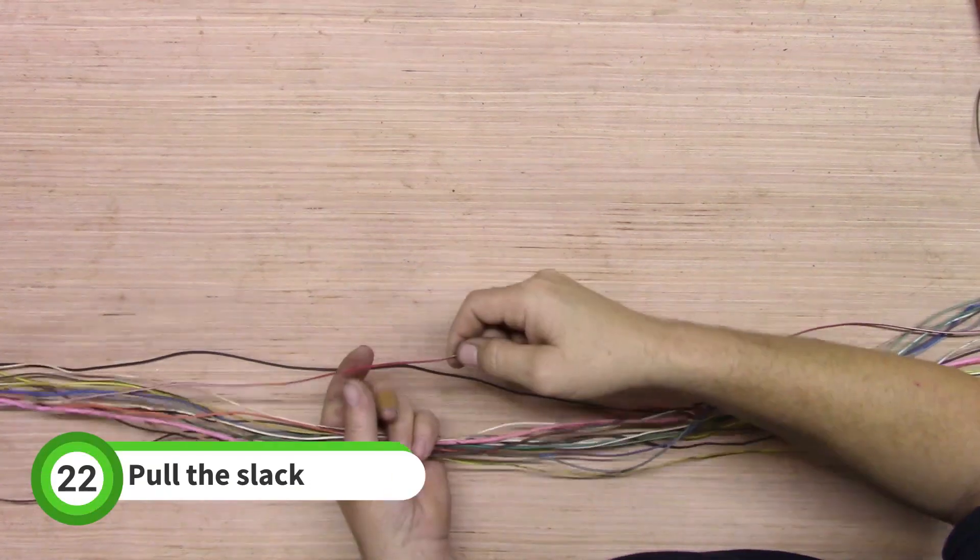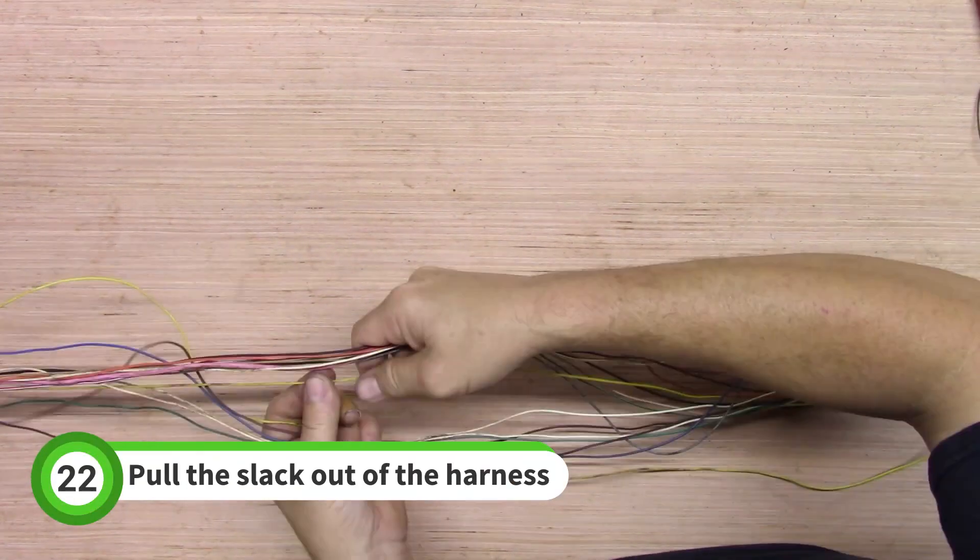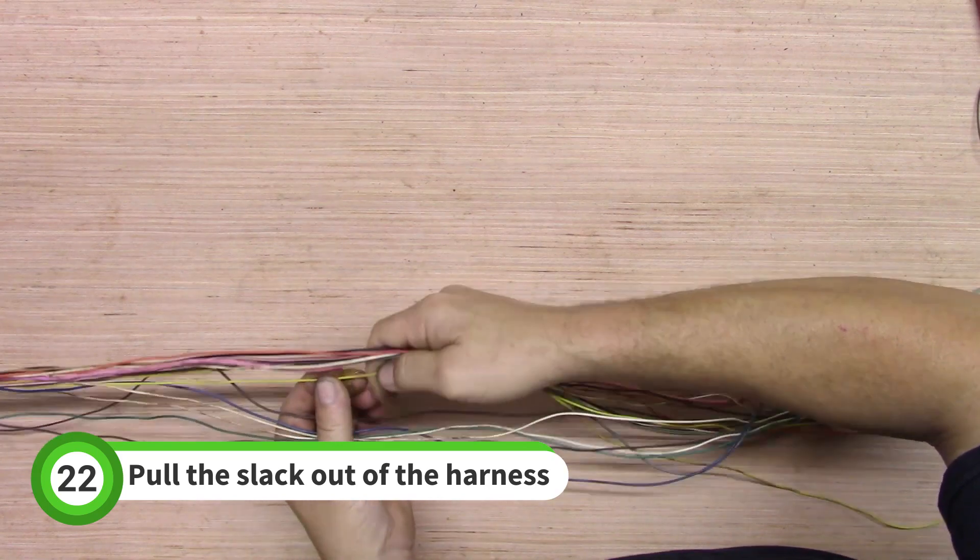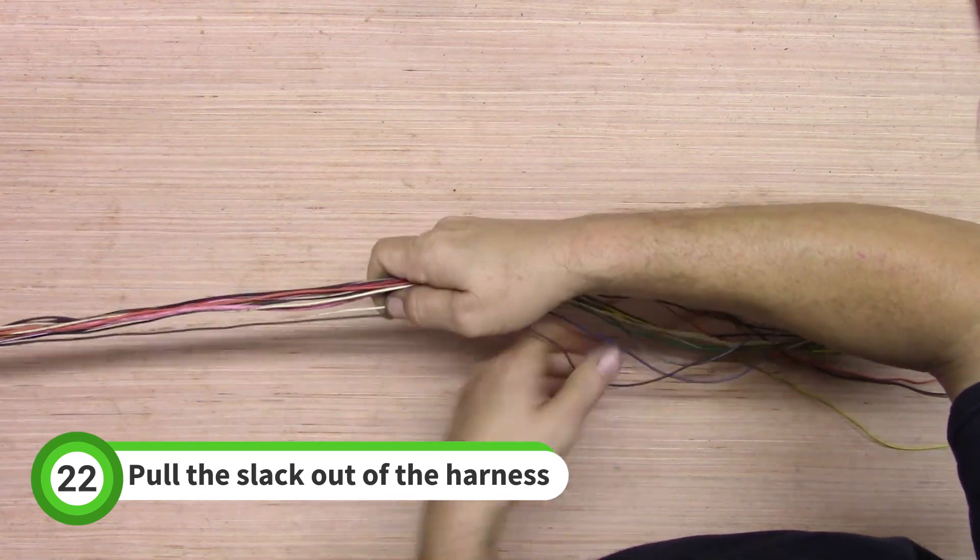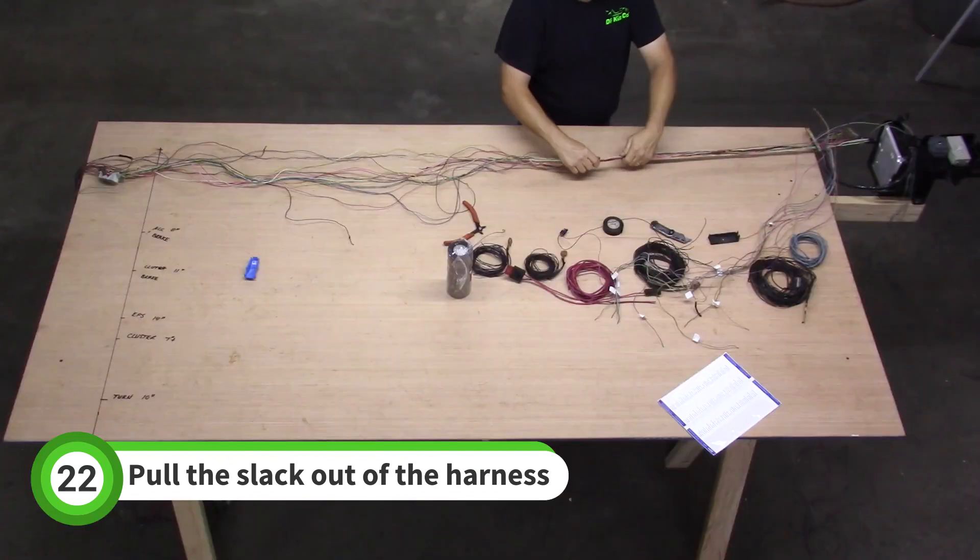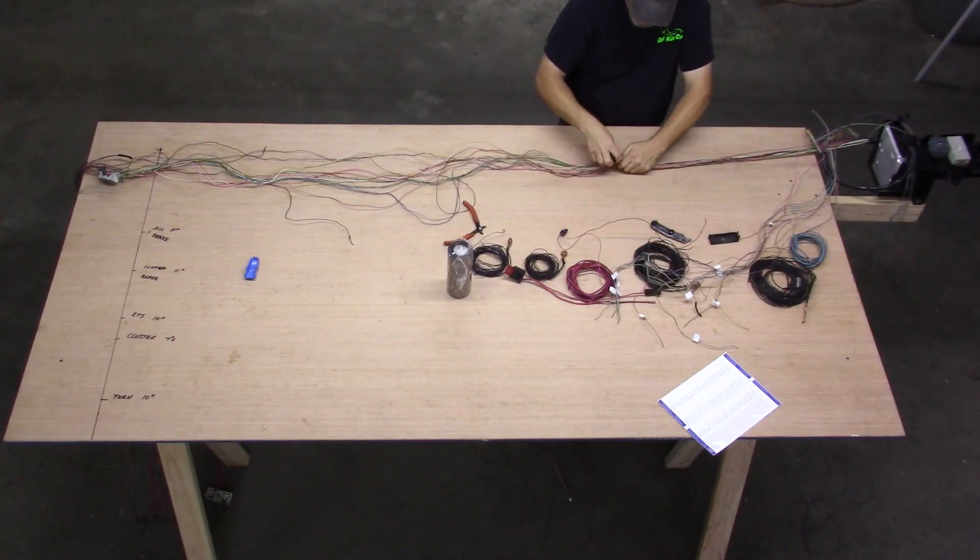A few feet from the fuse box housing, pull the slack out of each wire as shown. We are trying to pull each wire so that they are the same length from the fuse box housing to where we are holding them. Once you have all the wires tight, tape them together.